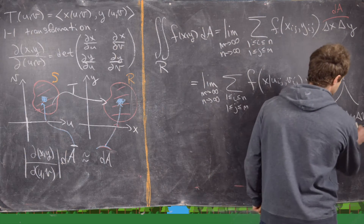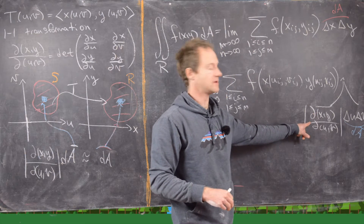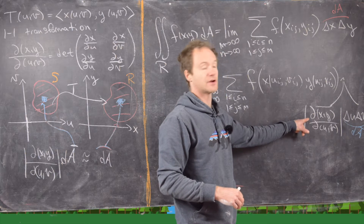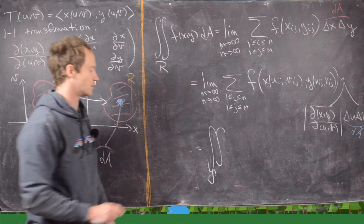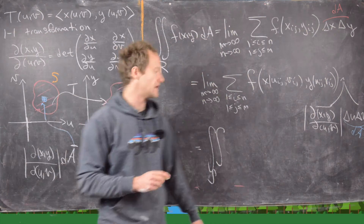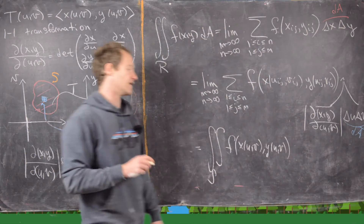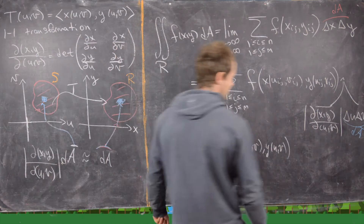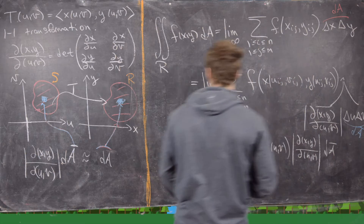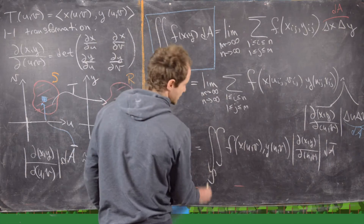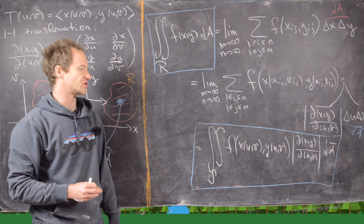This is our dA-bar component. Now this term — f composed with X(u,v) and Y(u,v) — is just a function of U and V, so it gets multiplied by our original function. That means we can bring this back to a double integral over S in the UV plane: the integral of f evaluated at X(u,v) and Y(u,v) times the Jacobian dX,Y/dU,V, times dA-bar. Looking at the extreme left and right sides gives us the two-variable form for the change of variables formula for integrals.